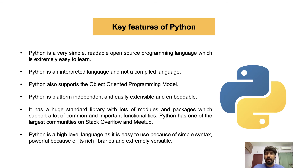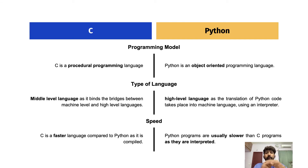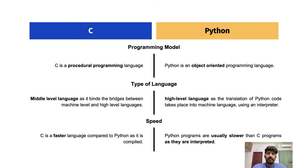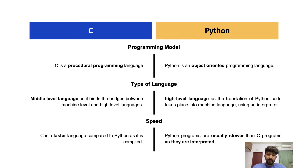Now let's start with the comparison of C and Python. First, looking at the programming model: C is a procedural programming language while Python is an object-oriented language. C does not allow object-oriented principles and is considered a middle-level language because it bridges the gap between machine-level and high-level languages. Python, on the other hand, is a high-level language. Regarding speed, C is much faster than Python since Python is interpreted — every single line is processed individually, which slows things down.